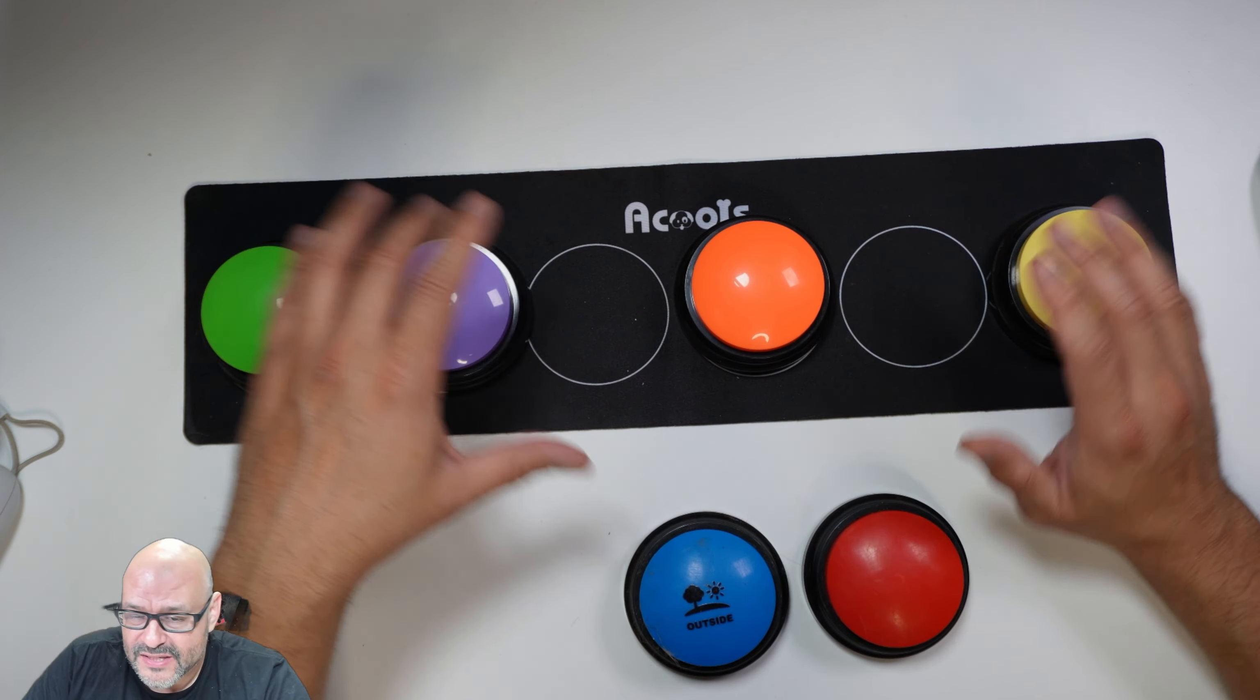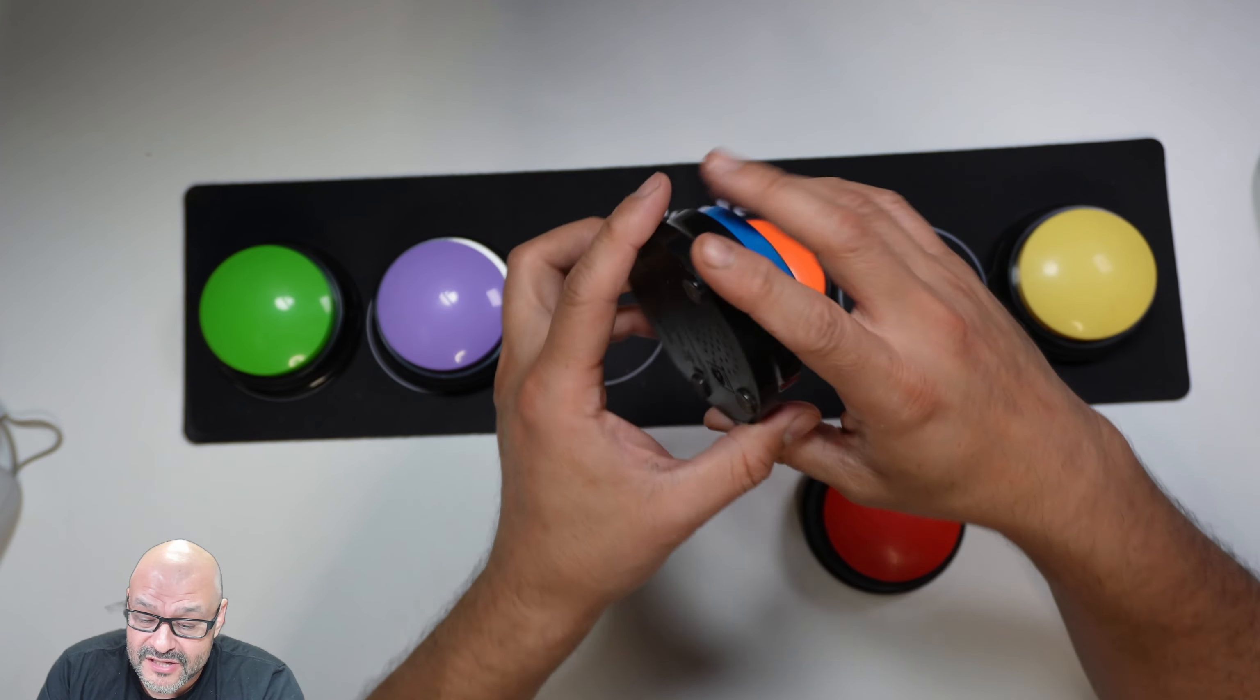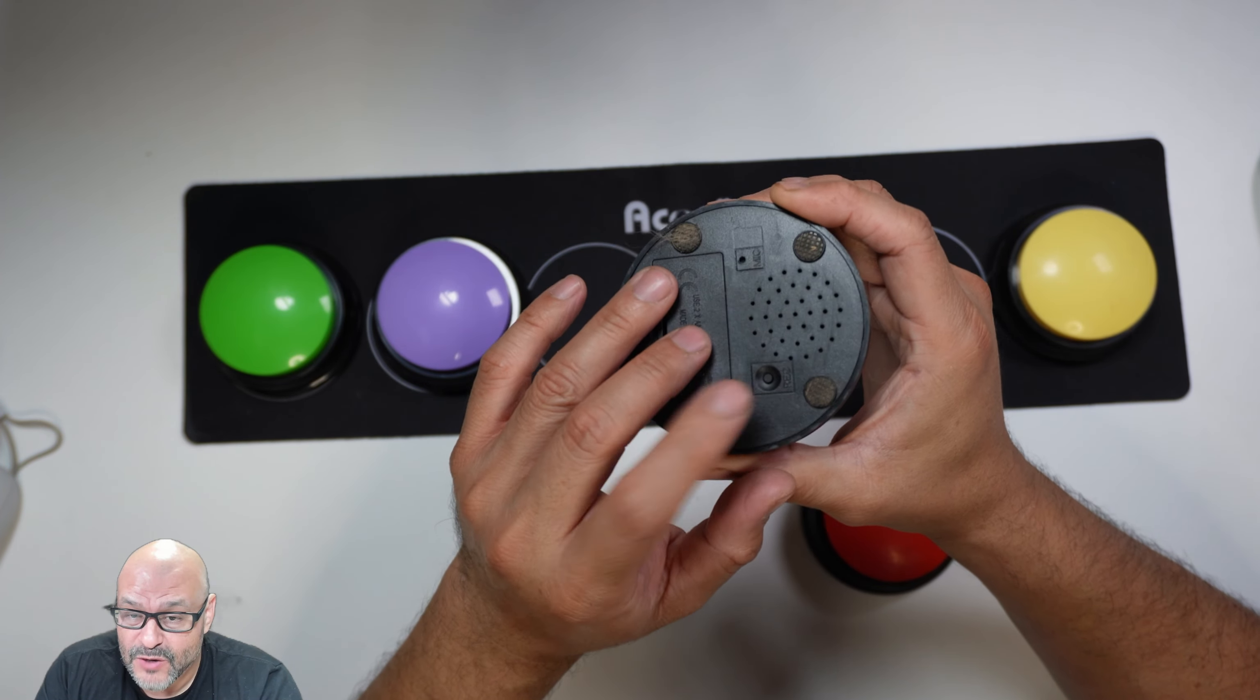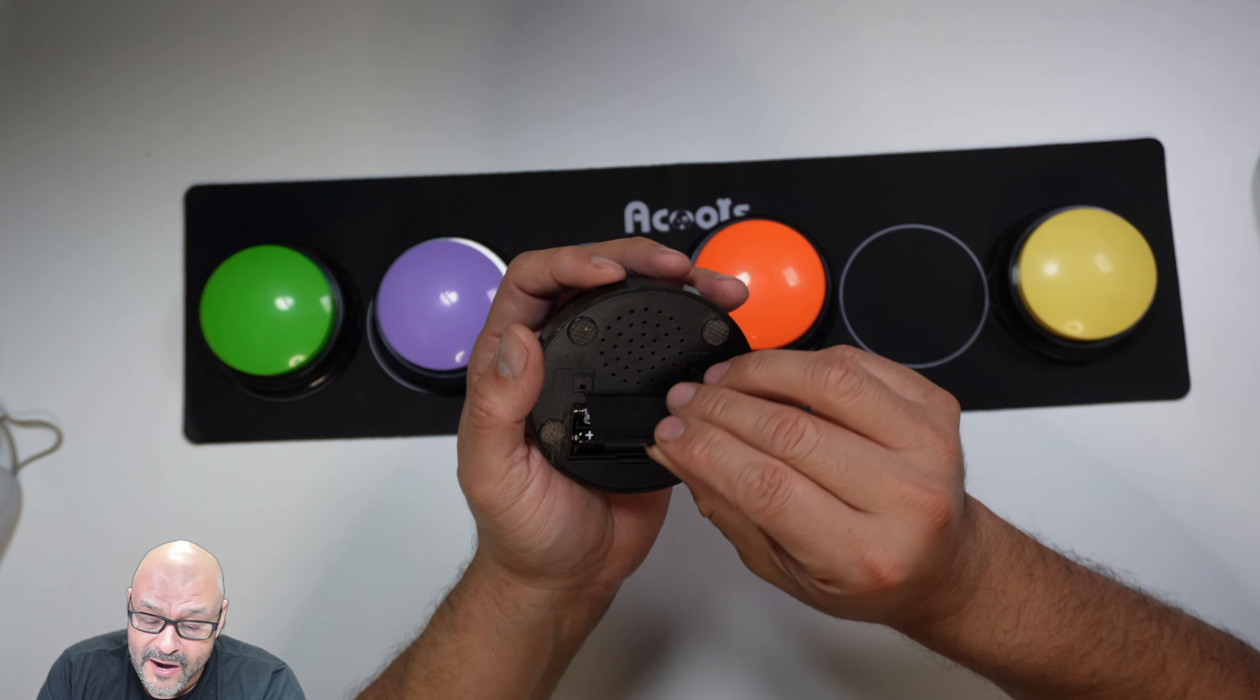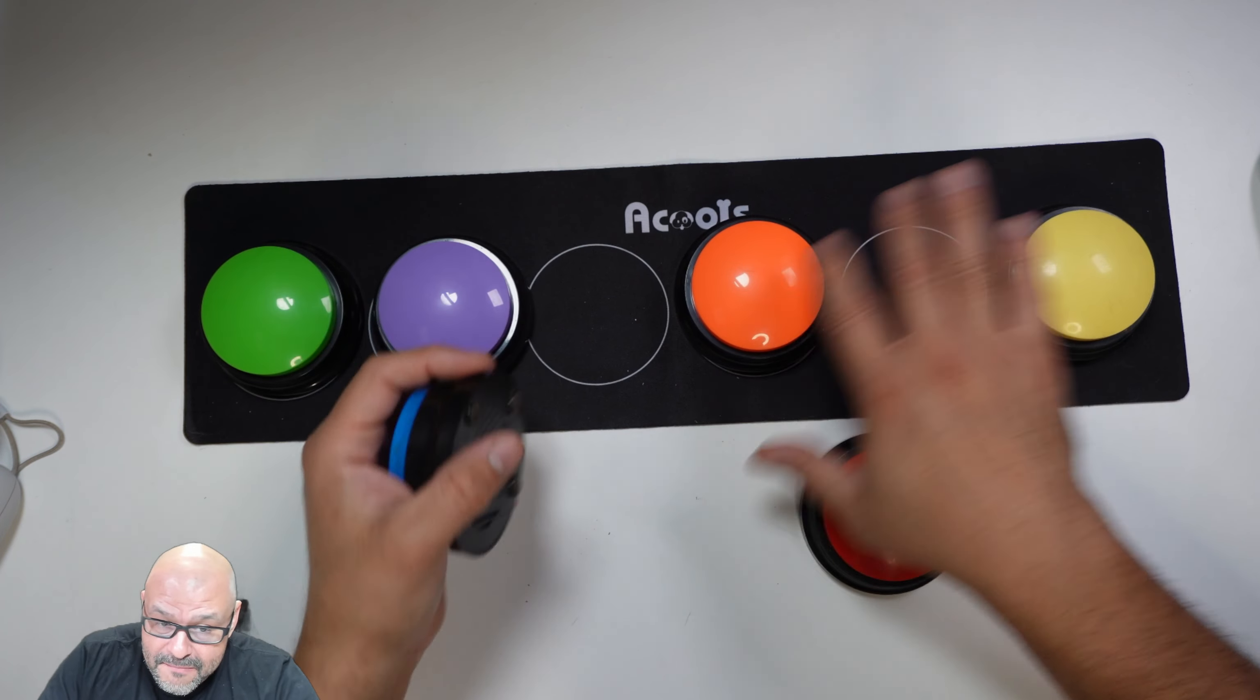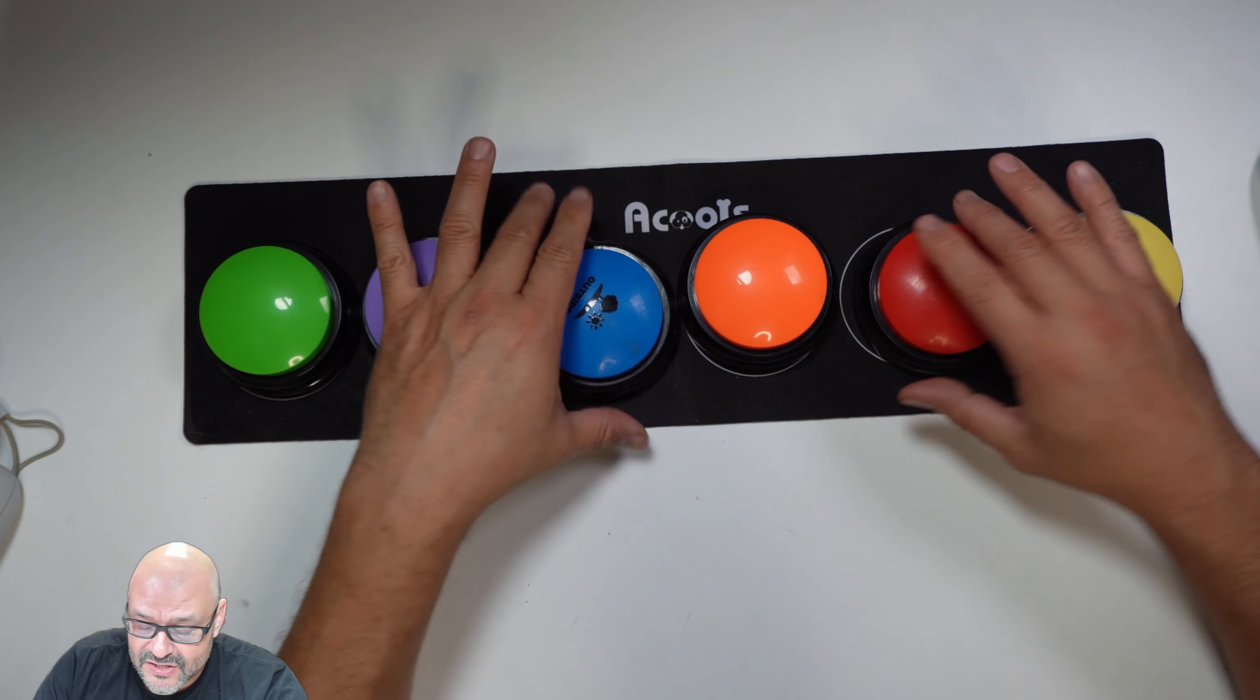So what you do is you actually program your buttons. First of all, there's an audio button in the back and there's a recording button. It does take AAA batteries, two batteries they require. Now, they do give you the mat included, but you can just do them individually.